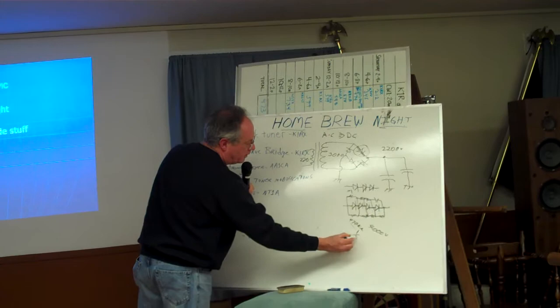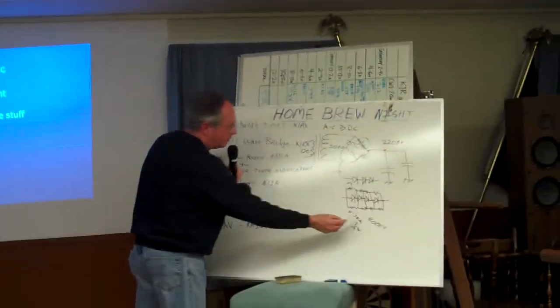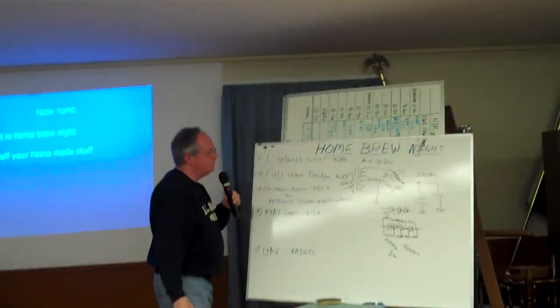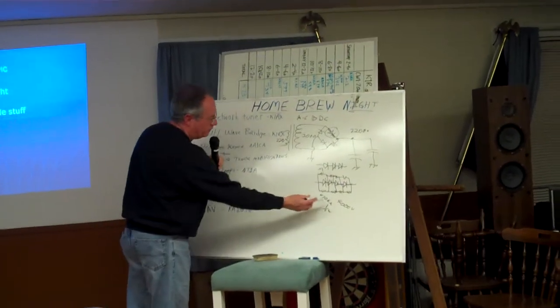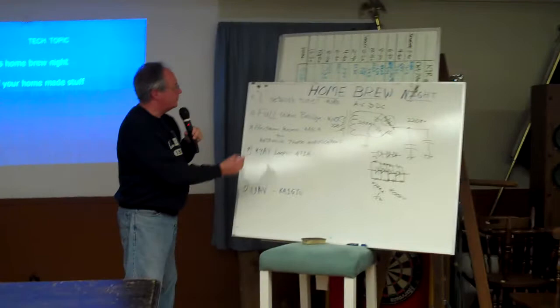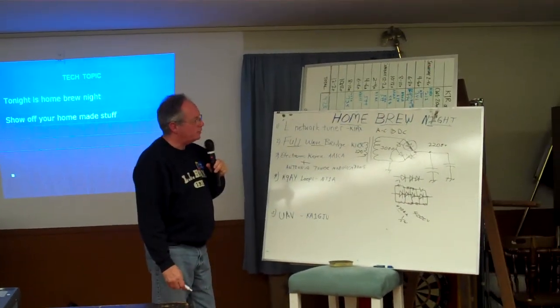Because you want to make sure the voltage rating is okay. And these are only half watt resistors, because there's very little current here. When you get like 2 million ohms across 2,000 volts, it's pretty low current. So you can get away with a half a watt resistor. So that's this full wave bridge circuit that I put together for this amplifier.